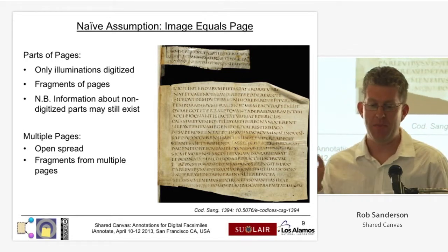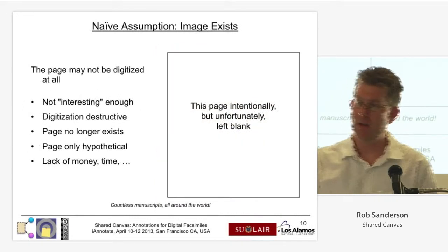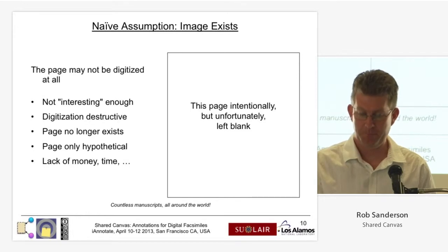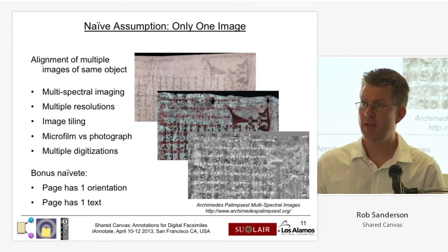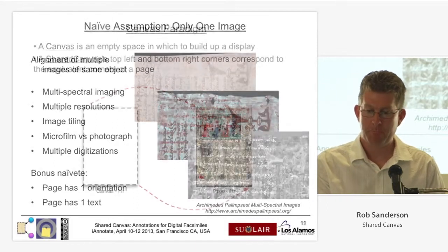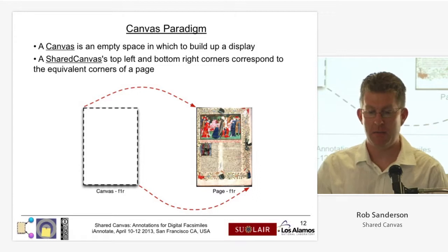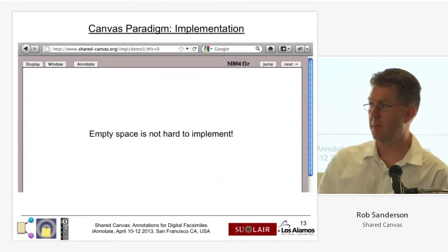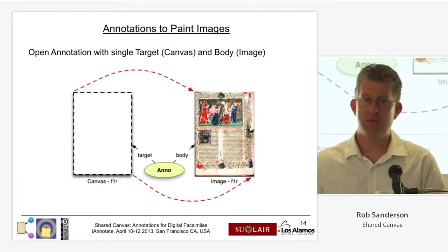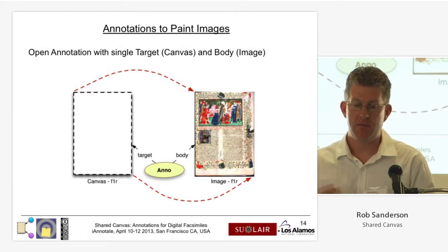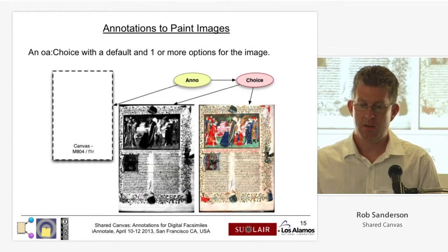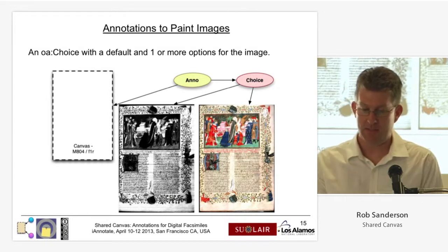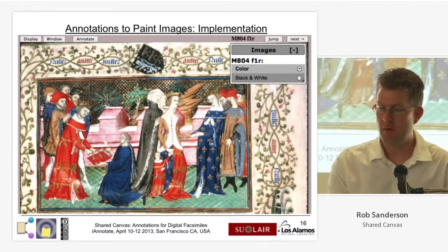Some other examples: there are only parts of pages that could be digitized, like fragments; the image may not exist if it hasn't been digitized or isn't interesting enough. This is a particularly interesting case of multispectral analysis of the Archimedes palimpsest — the top text is 13th century, the bottom text is 9th century, and you can only see it under certain lighting conditions. So we have a canvas paradigm, like Photoshop or HTML, that represents the page — that's pretty easy to implement. To populate that canvas we need some way of associating resources with it, which seems like annotation. You may want to associate multiple resources if there are multiple digitizations.